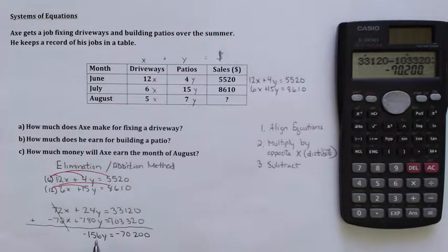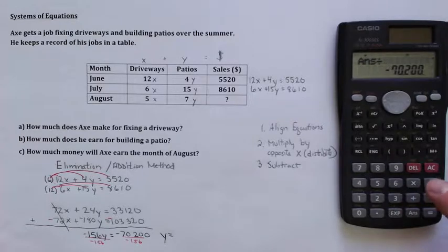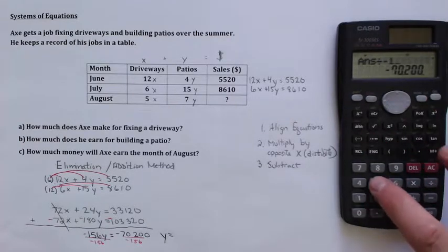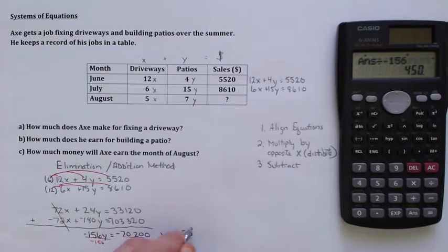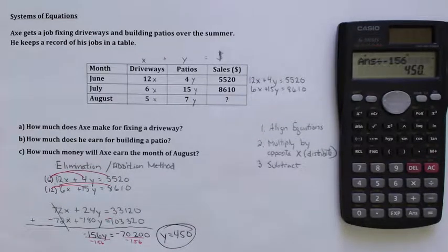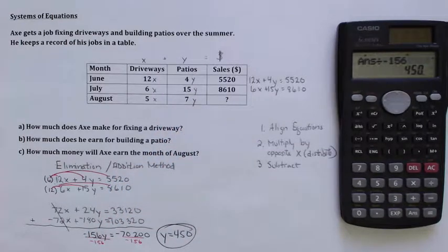Almost there. What do I have to solve for? I have to solve for y, and how am I going to do that? Well, I'm going to divide both sides now by negative 156. And that's the second to last step. When we do that, I'm going to get y is equal to something. So I'm going to take that number, negative 70,200, and I'm going to divide it by negative 156. And that's going to leave me with 450 for the y. So the y is 450. That's what he's charging for a patio. 450 bucks.